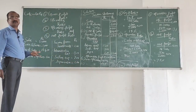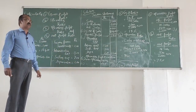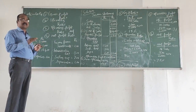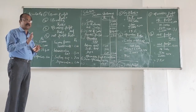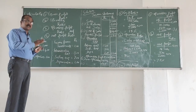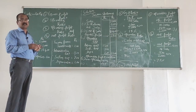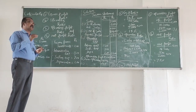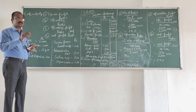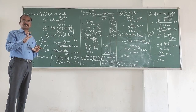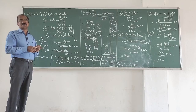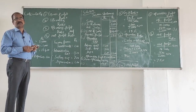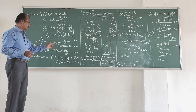Along with operating profit, we add non-operating income if any. For a non-finance business, income generated through sale of products or services is operating income. All other incomes are non-operating income. For a finance business that lends money, interest income is the operating income. For non-finance businesses, all incomes other than sales and service revenue are non-operating income.